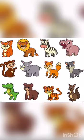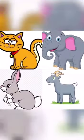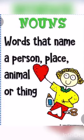Cat, elephant, rabbit, goat — these are names of animals. So a noun can be a name given to an animal.